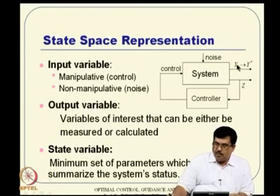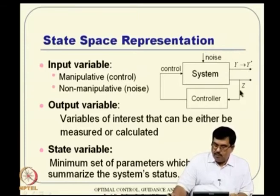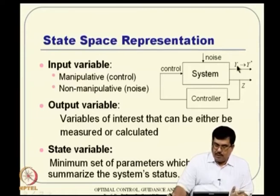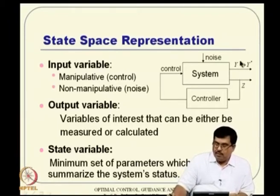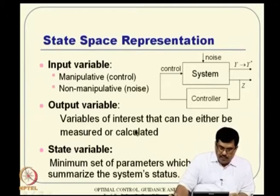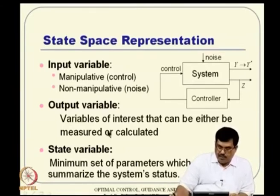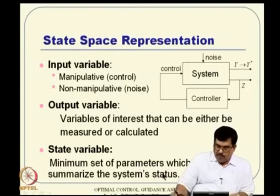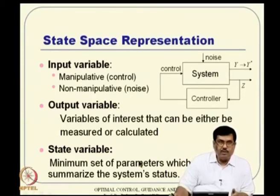These two may or may not be the same. In other words, your performance output can be y, and you want to drive it to some desired value y-star. Whereas the measurement output can be z, and that may go into the controller and then control action can take place. It may happen that part of the y variables or all of the y variables can be part of z and vice versa, but they need not be the same. The state variable is a variable of great importance, and it is defined as the minimum set of parameters which completely summarize the system status.